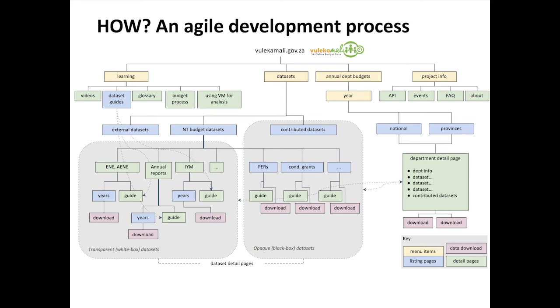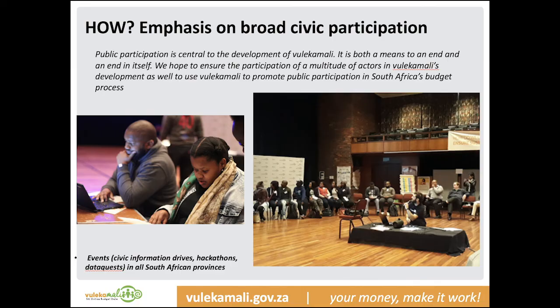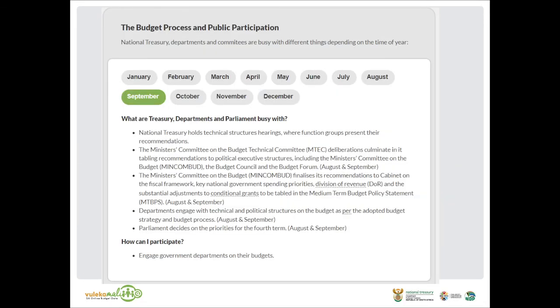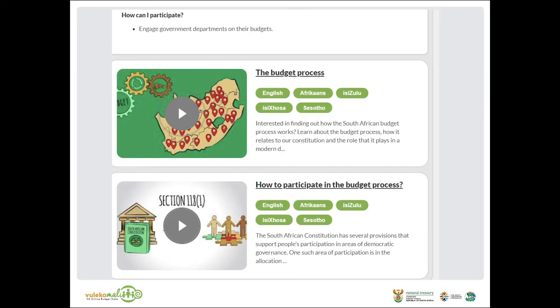I have four key ways we've said how do we want to make broad civic participation possible. The second element, in addition to the agile process, is emphasis on broad civic participation. One of the ways is that the project wants to recognize participation both as a means to an end and as an end in itself — on one hand we want Vulekamali to open up space and promote participation within budget processes, but at the same time we also want to use meaningful participation in order to influence the development of the portal itself. It's a kind of cyclical process about public participation.